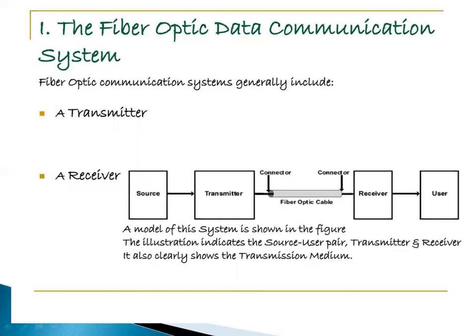Fiber optic data communication systems consist of converters. At the source side, this converter is called the transmitter; at the receiver side, it is called the receiver. The transmitter converts electrical signals into light waves, which travel along the fiber optic cable. The receiver on the destination side then receives the light waves and converts them back into electrical signals.